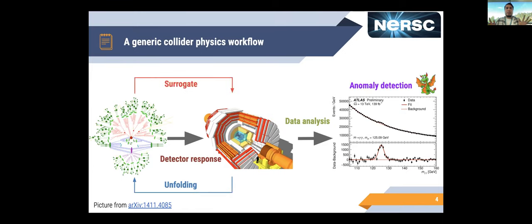From the theory perspective, in order to compare with the experimental data that we collect with real particle collisions, we need to also create our own predictions on how these particles should interact with each other. So we do that with simulations, and we also pass them through a simulation of the detector material and how the detector would measure each of the particles that we predict in the theory. Then the same data analysis methods that we use with real data, we apply to the simulation that encodes our knowledge, and we compare the two to see how well we can do.